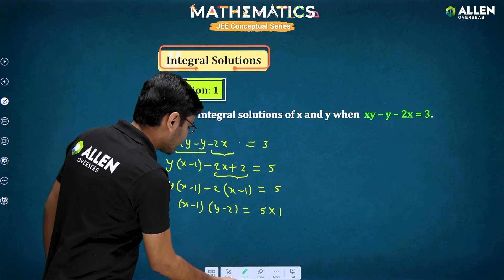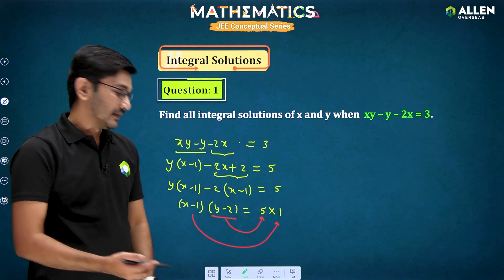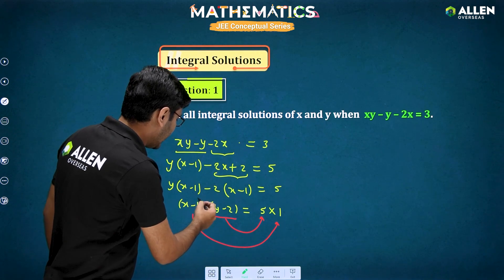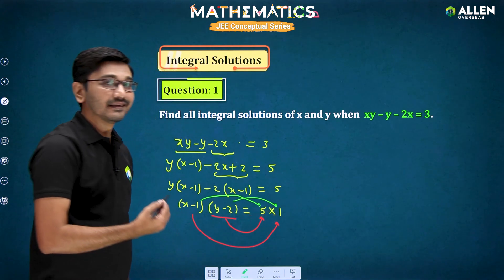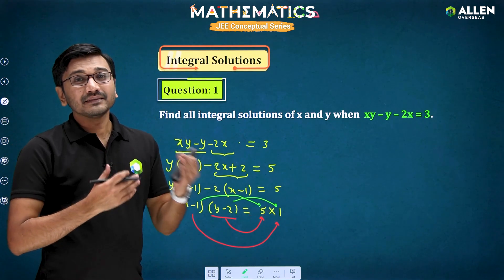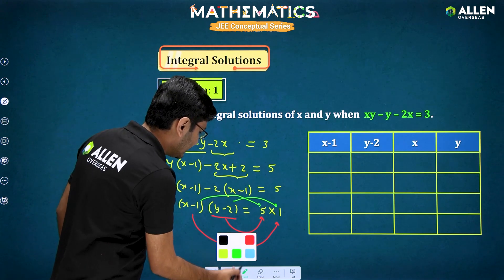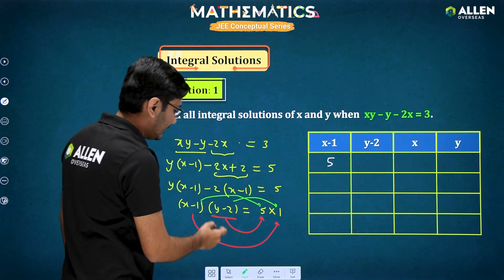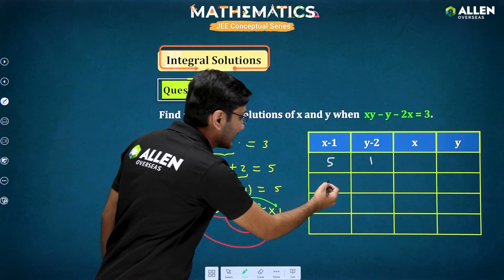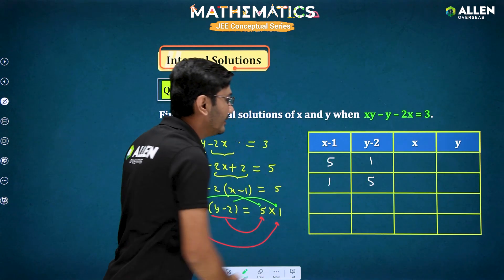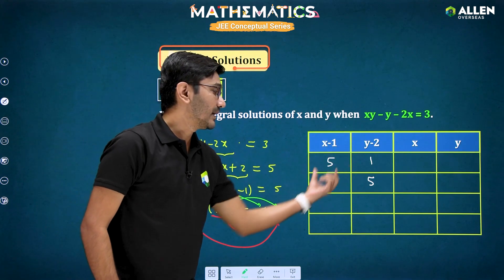If you compare y minus 2 equal to 5 and x minus 1 equal to 1, you'll get one solution. If you compare x minus 1 equal to 5 and y minus 2 equal to 1, you'll get another solution. So by comparing different combinations, we are going to get different solutions. The product of x minus 1 and y minus 2 must always equal 5.